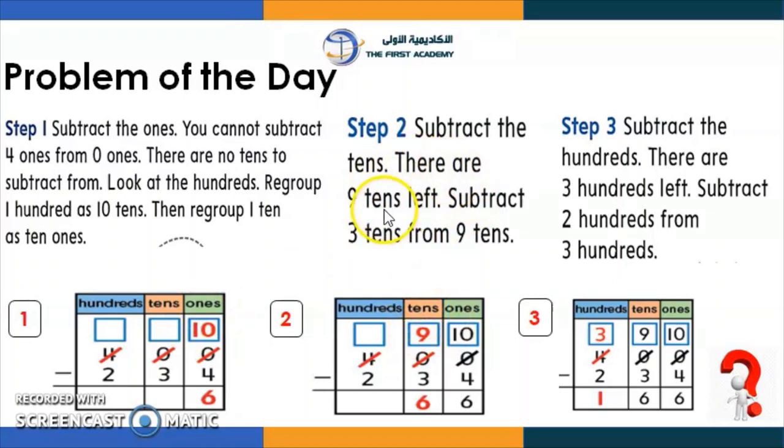Subtract the tens. There are 9 tens left. Subtract 3 tens from 9 tens. Step 3. Subtract the hundreds. There are 3 hundreds left. Subtract 2 hundreds from 3 hundreds. So I think these steps are clear because in the video, we get to know what to do regarding subtract across zero.